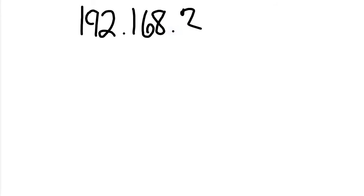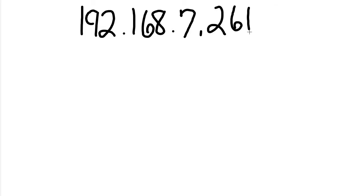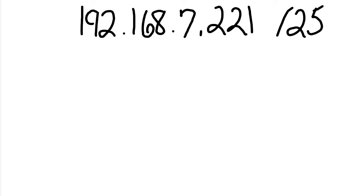I'm going to pick an IP address — not one already in your list so you have to do the work yourself. The IP address I'm picking is 192.168.7.221, and I'm going to give it a subnet mask of /25. The first thing I'm going to do is write out 25 ones representing my subnet mask.